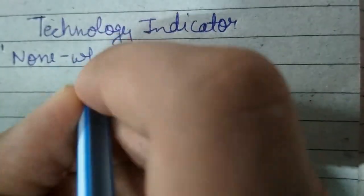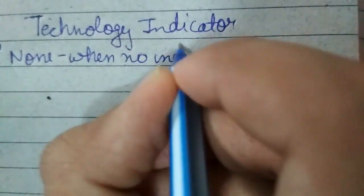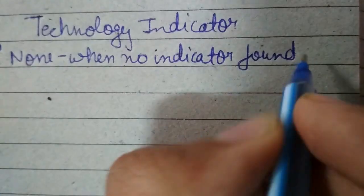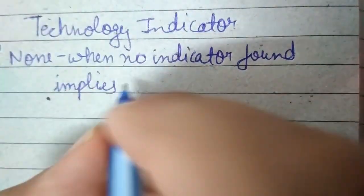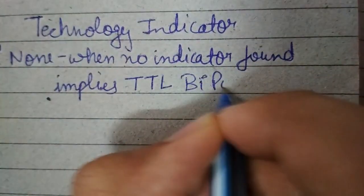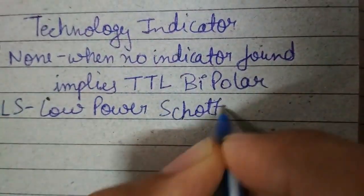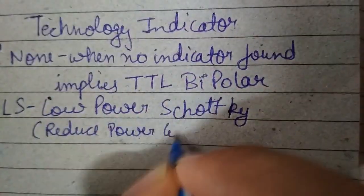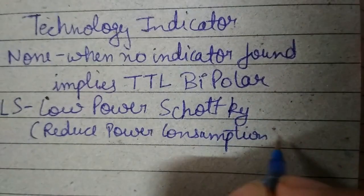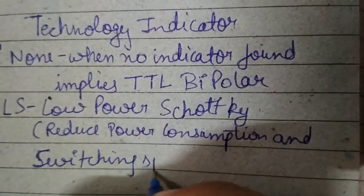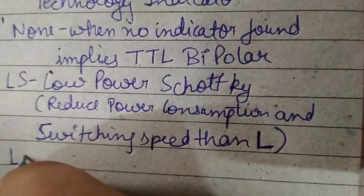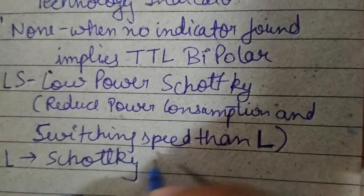When there is no technology indicator, it implies the original TTL technology. LS represents Low Power Schottky, which has reduced power consumption and switching speed compared to standard TTL. S represents Schottky logic. C represents CMOS technology.